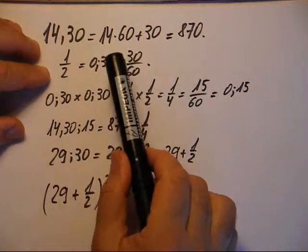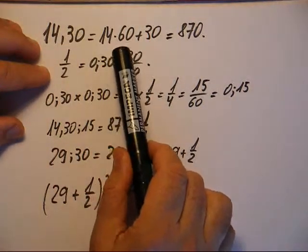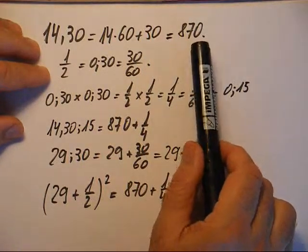Ainsi, 14,30, c'est-à-dire 14 fois 60 plus 30, égale 870.